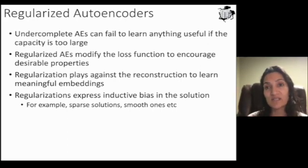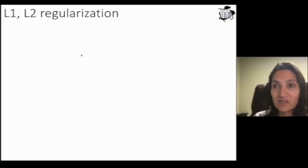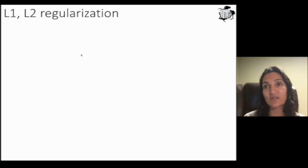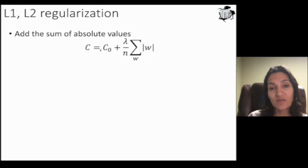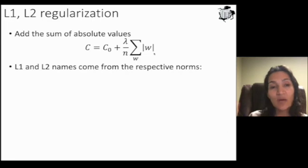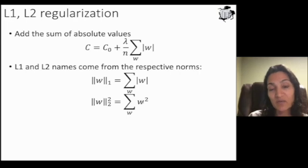For example, you might want a sparse solution or a smooth solution. Two examples that we've covered before are L1 and L2 regularizations. L1 is just the sum of the absolute values. So if you have your original cost function C sub 0, you add a lambda or regularization parameter plus just the sum of all the weights. L1 and L2 both come from the names of those respective norms we talked about earlier in class. L2, of course, is the squared sum of all the weights.